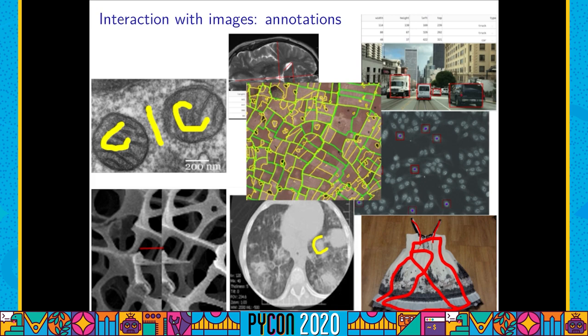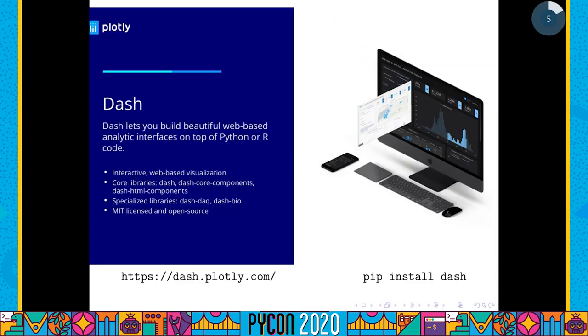In some applications, rough boundaries like bounding boxes are not enough — you need to make a very accurate training set by delineating very precisely all the pixels of all objects, like the roads in a remote sensing image. So how can we build a good image annotation framework with Python? This is basically the subject of my talk, and for this, let me first introduce you to Dash.